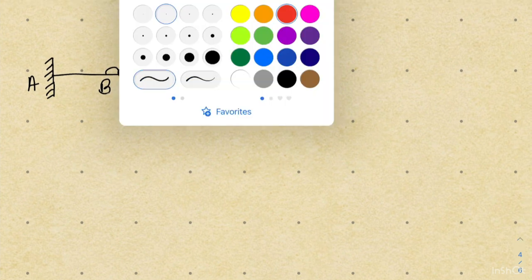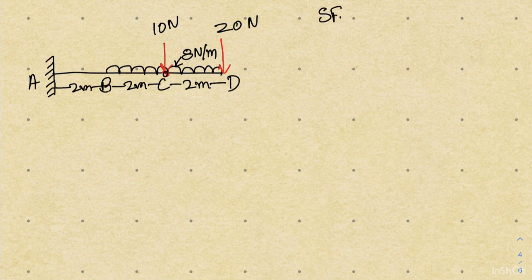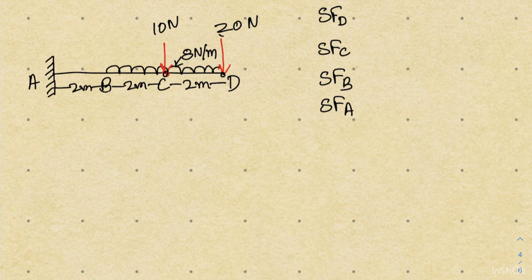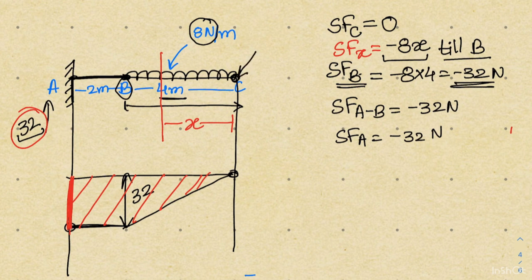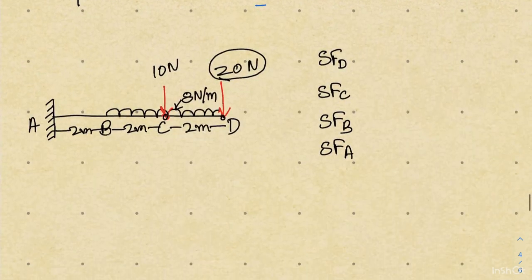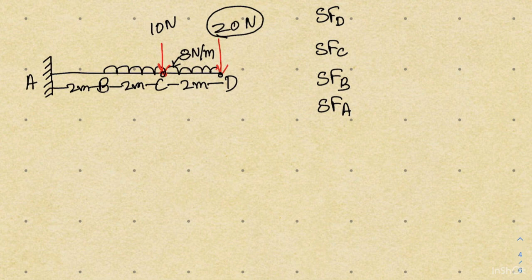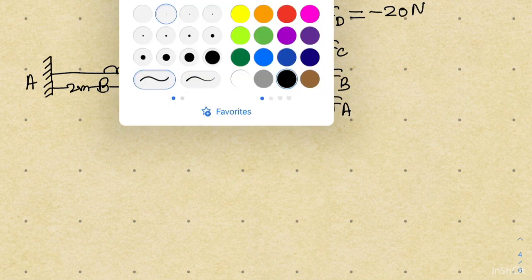Now let's solve the last problem, which will make the concept more concrete. We need to find the shear force at points D, C, B, and A. At point D, a 20 newton point load is acting. Unlike the previous case where the UDL started at the free end giving zero shear force, here a 20 newton force acts at point D, so the shear force at D is minus 20 newton, with the negative sign indicating a downward load.